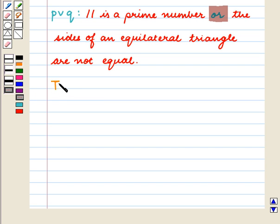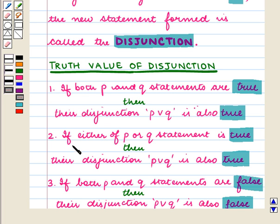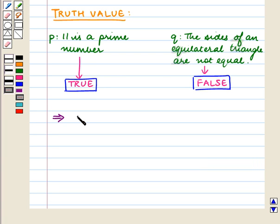Now, we shall determine its truth value. Here the statement P, '11 is a prime number,' is a true statement. And the statement Q, 'the sides of an equilateral triangle are not equal,' is a false statement. As we know from the key idea, if either of P or Q statements is true, then their disjunction P or Q is also true. This implies that P or Q is a true statement.